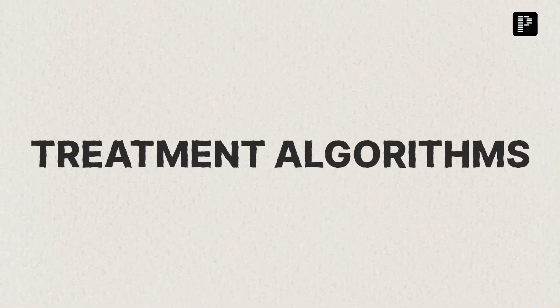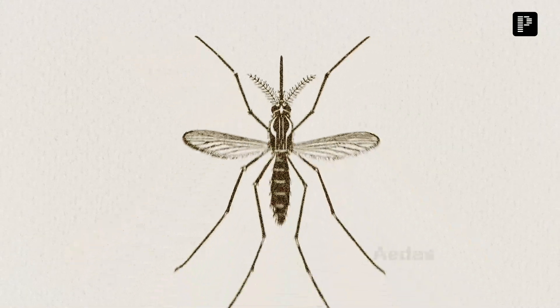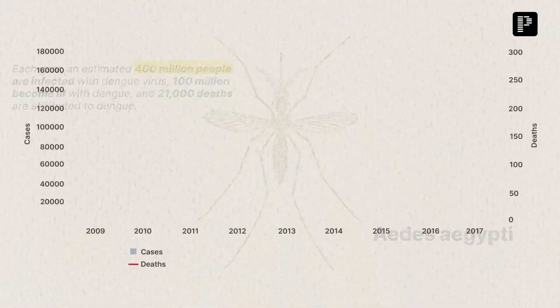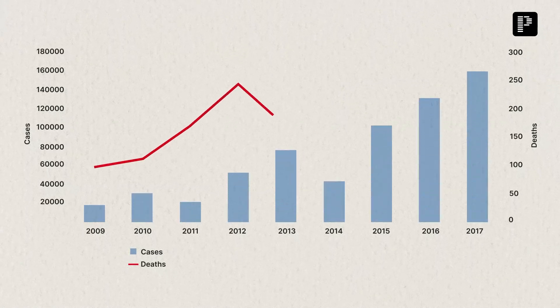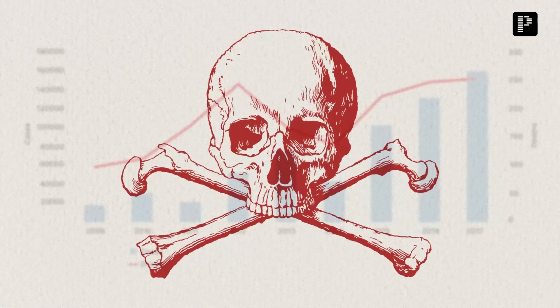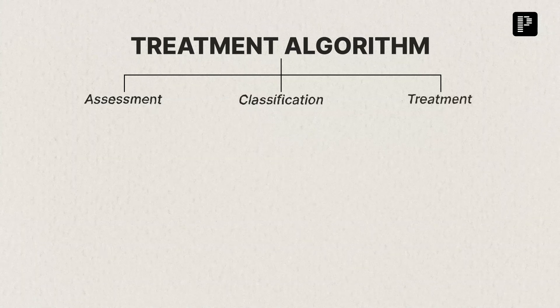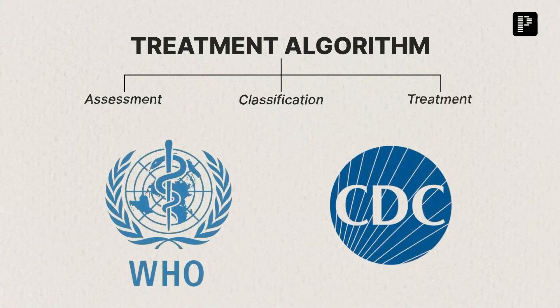Welcome to Treatment Algorithms. Today we will be discussing Dengue Fever, which has become a growing global health crisis affecting over 100 million people each year. In India alone, tens of thousands of cases are reported annually with thousands of deaths as a grim reminder of the dangers this mosquito-borne illness causes. Today we'll dive into how to assess, classify, and treat this disease based on trusted guidelines from the WHO and CDC.